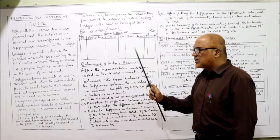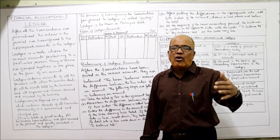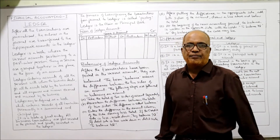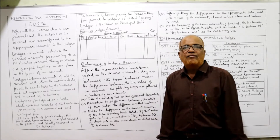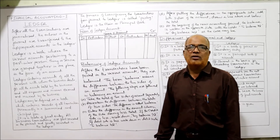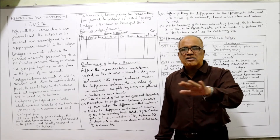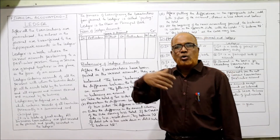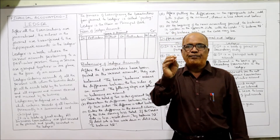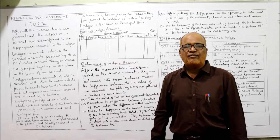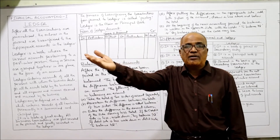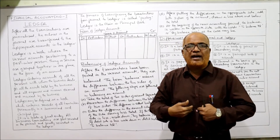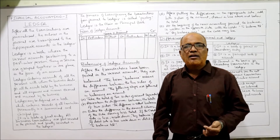Now, balancing of ledger accounts. After posting all entries from journal to ledger, at the end of the year we have to find out what the balances are in every account. Some accounts' balances are closed — for example, if we sold goods to Mr. X for 5 lakh on credit, his account is debited; later when Mr. X pays 5 lakh, his account is credited.